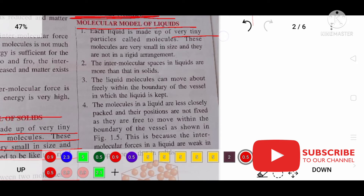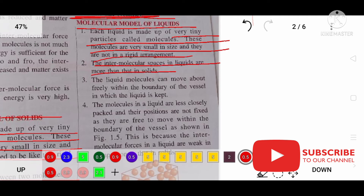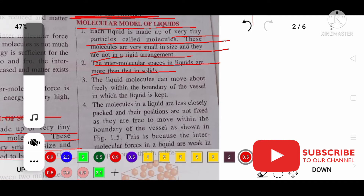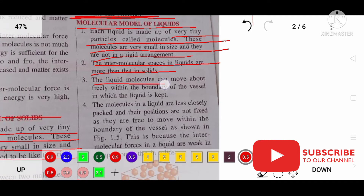Each liquid is made up of very tiny particles called molecules. These molecules are very small and not in a rigid arrangement. The intermolecular space is greater than in solids, and liquid molecules can move about from their mean position within the boundary of the vessel.